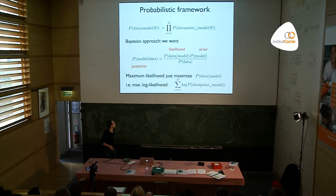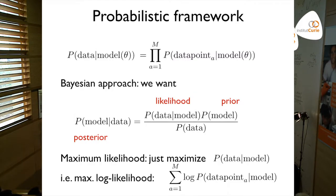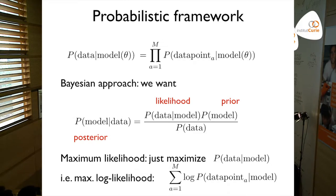The maximum likelihood approach, which you may have heard about, is to just maximize the likelihood part. It's equivalent to saying that the prior is flat, so you remove it, and since the normalization is just a constant, you maximize over the different parameters of your model to find the model that best explains the data. When you have many data points, maximizing p or maximizing its log is the same thing, and if you take the log of that product it becomes a sum over the log p of each data point.